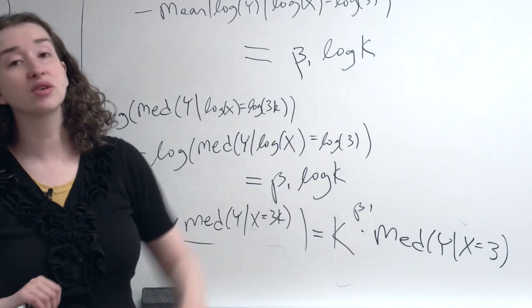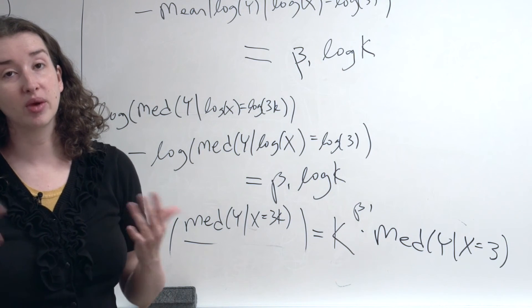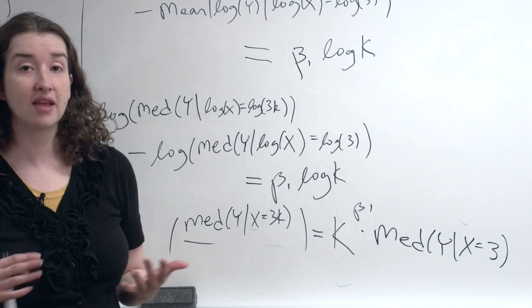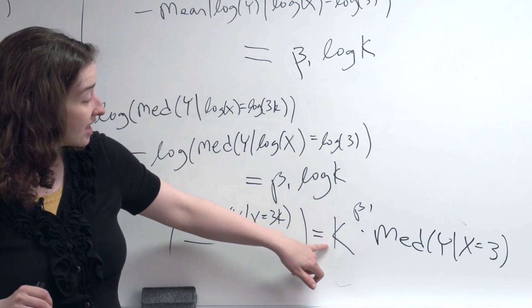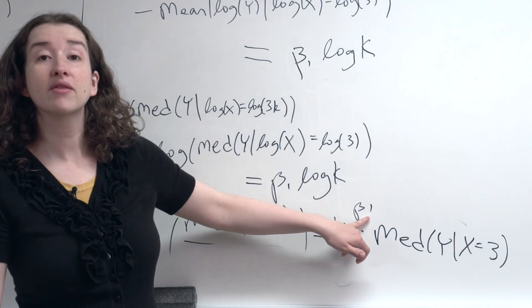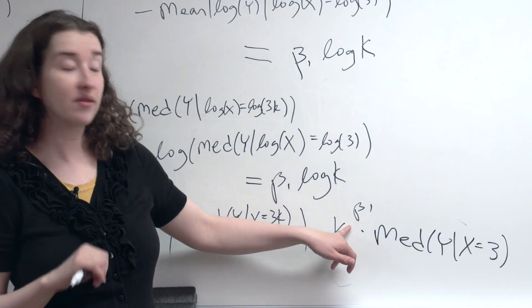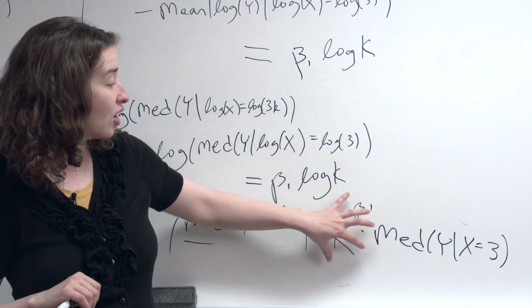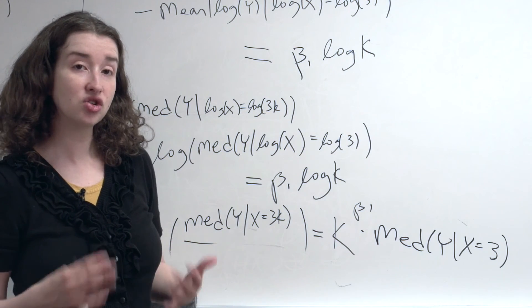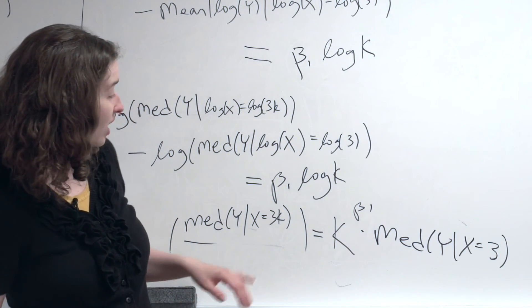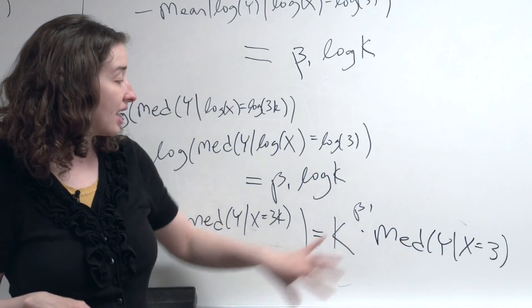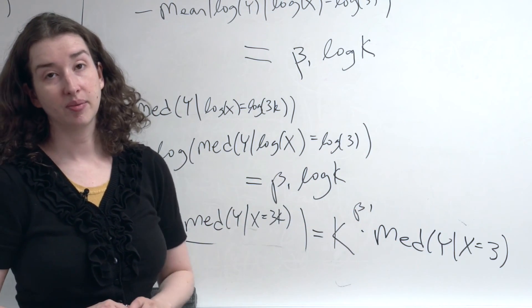We also have an interval for beta1 — not just an estimate of the slope when x and y are both on the log scale, but also upper and lower bounds for a 95% confidence interval. So we can take k to the power of the lower bound, and k to the power of the upper bound. Now we have lower and upper bounds for this quantity. We can say that we're 95% sure that the amount by which the median of y is multiplied, when x is multiplied by k, falls in some particular range.